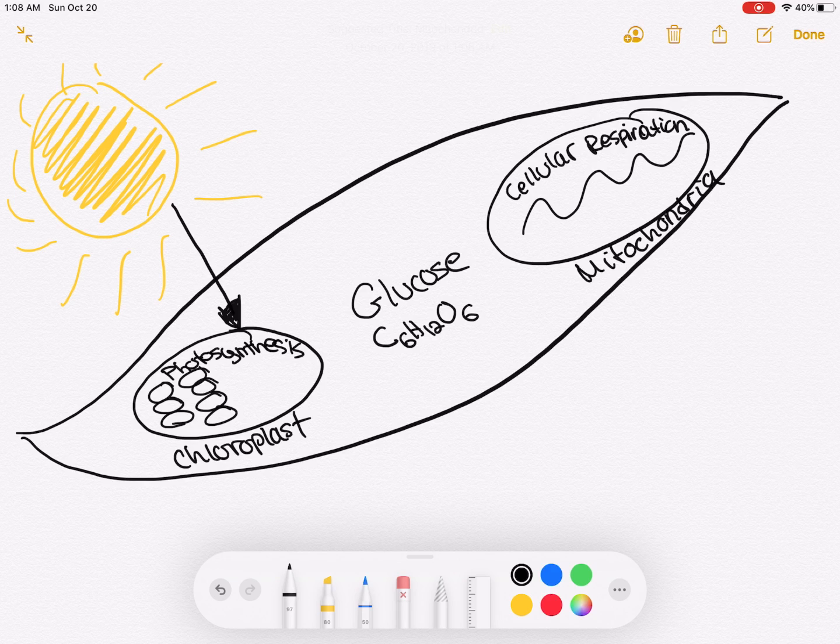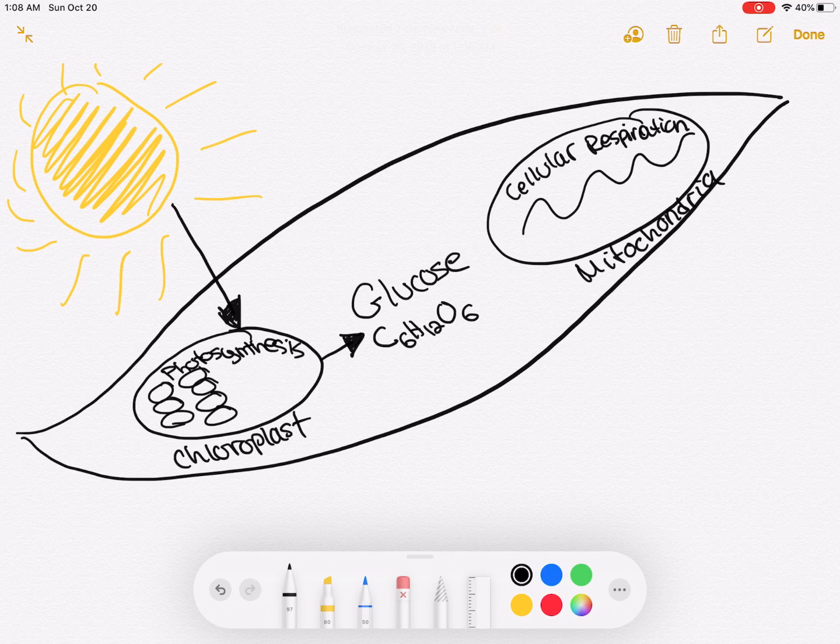Then the next direction is to draw an arrow from the chloroplast to glucose. This is telling me that I am producing glucose from photosynthesis. So photosynthesis is producing glucose. Glucose is just sugar.